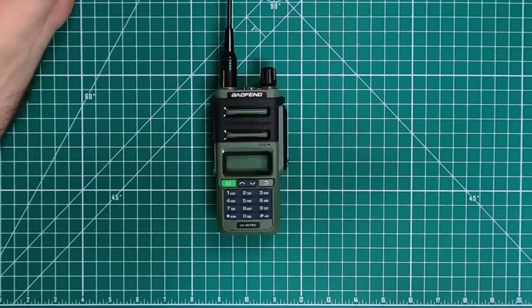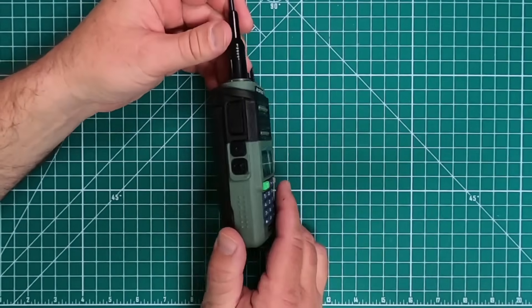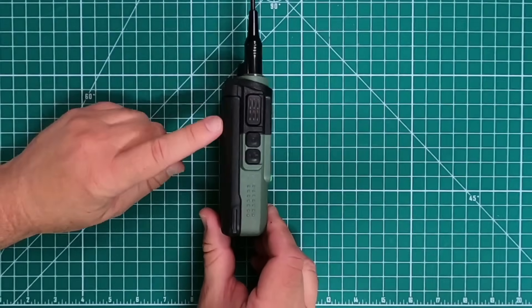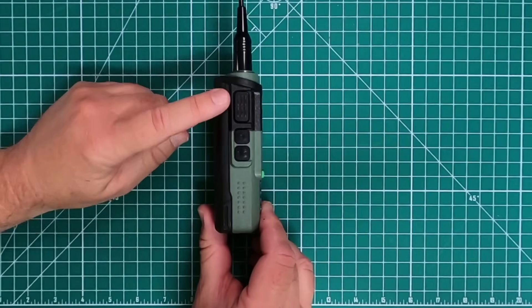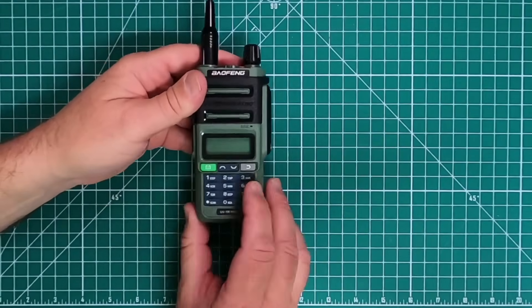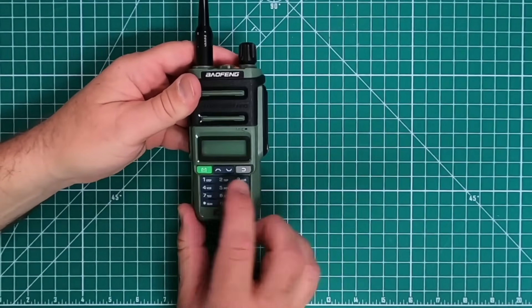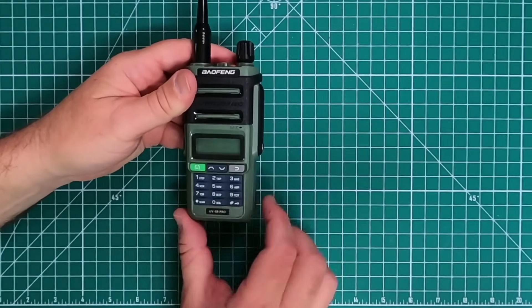This radio has the regular items that any UV-5 series radio is going to have. You have your two programmable buttons here on the side, push to talk, menu button, up and down arrows, the regular keys. You can lock it.